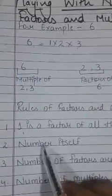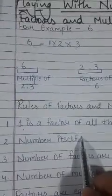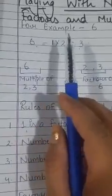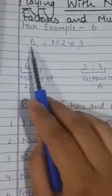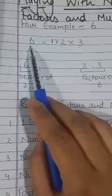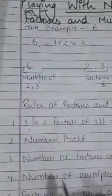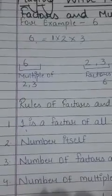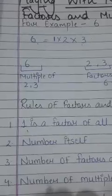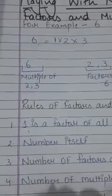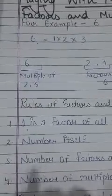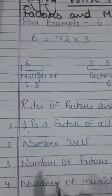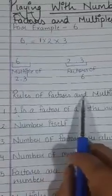The next rule is the number itself. Similarly, the same number — for example, 6 — will also be a factor of that number itself. For example, if we have the number 12, the factors of 12 will be 1, 2, 3, 4, 6, and also 12. So 12 will also be included in the factors. The number itself is always one of its own factors. This is the second rule of Factors and Multiples.